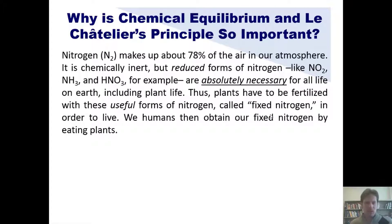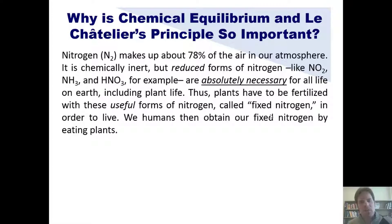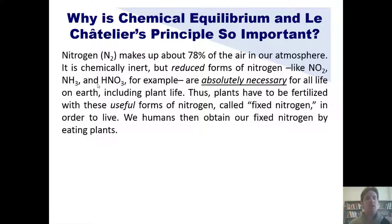Why are chemical equilibrium and Le Chatelier's principle so important? Nitrogen — N2 — makes up about 78% of our atmosphere and is chemically inert, meaning it doesn't react with much. However, reduced forms of nitrogen such as NO2, NH3, and HNO3 are absolutely necessary for all life on earth, including plant life. Plants must be fertilized with these useful fixed forms of nitrogen to live, and we humans obtain our fixed nitrogen by eating plants or animals that ate plants.